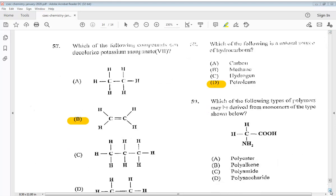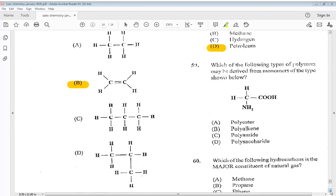Question 59. Which of the following types of polymers may be derived from monomers of the types shown below? So we know that is C polyamide.